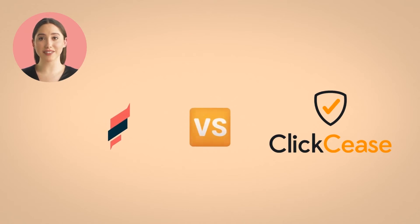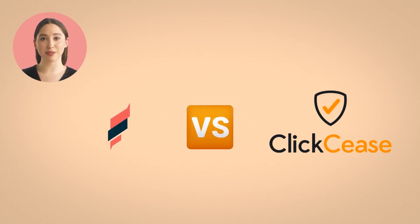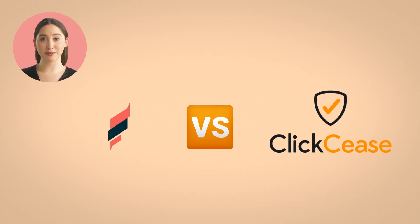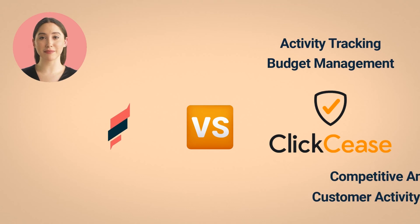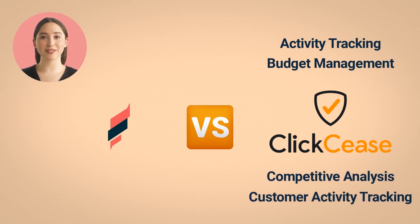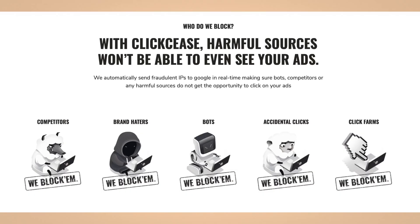Traffic Guard and ClickCease are both cloud-based click fraud protection tools that help advertisers analyze, monitor, and block click fraud. Both plans start from fifty dollars per month on a usage basis. While both ClickCease and Traffic Guard share almost the same features, ClickCease chooses to differ — it offers activity tracking, budget management, competitive analysis, customer activity tracking, and more.